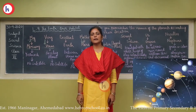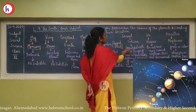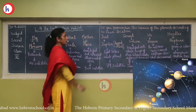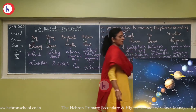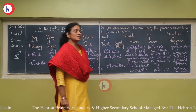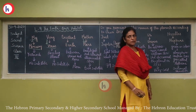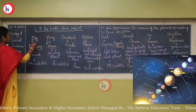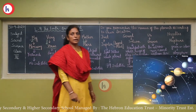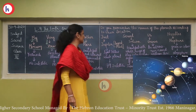There are a total of 8 planets in our solar system: Mercury, Venus, Earth, Mars, Jupiter, Saturn, Uranus, and Neptune. To remember them in order, use the sentence: 'My Very Excellent Mother Just Served Us Noodles.' Mercury — M — is the closest planet to the sun. It is yellowish in color, has no satellite and no atmosphere, and can be seen before sunrise and after sunset.